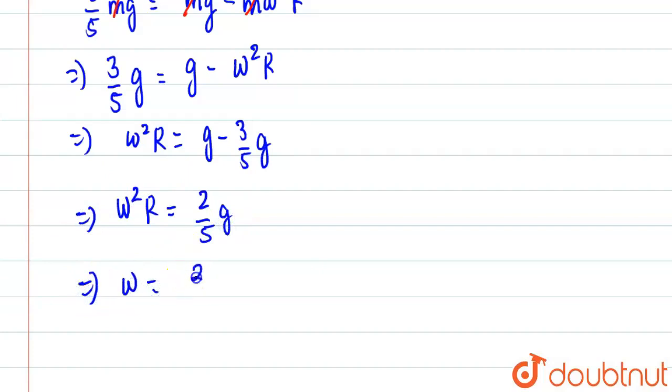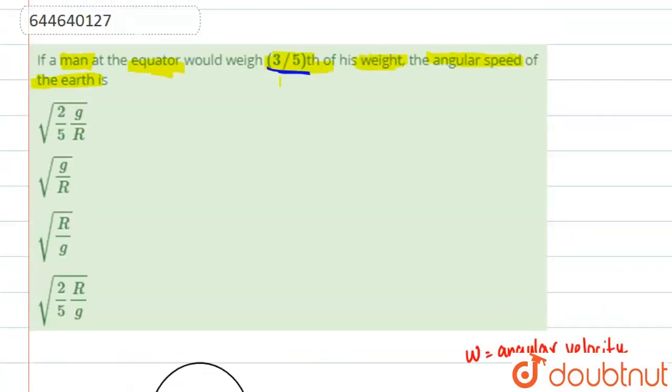Finally we'll have omega will be equal to square root of two g by five r. So this is basically omega square r. Let me write it differently because this is the answer: square root of two g by five r.